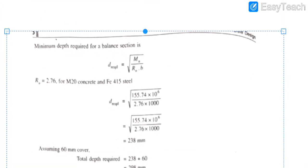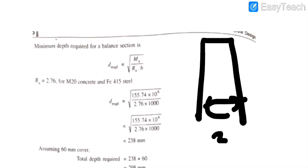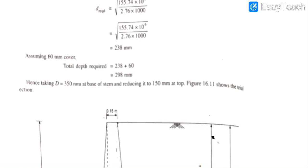The minimum depth required for the stem is calculated using Mu = 0.138 × fck × b × d². With Mu = 155.74 kN·m and fck = 20, we solve for d. Adding a clear cover of 60 mm, the total depth comes to approximately 289 mm, which we round up to 300 mm. For safety, we provide 350 mm thickness for the stem.